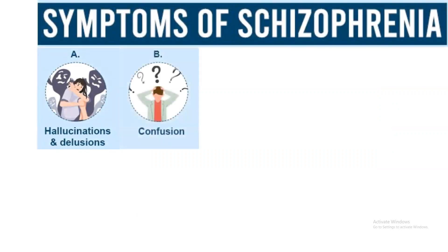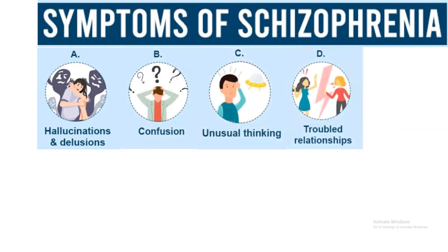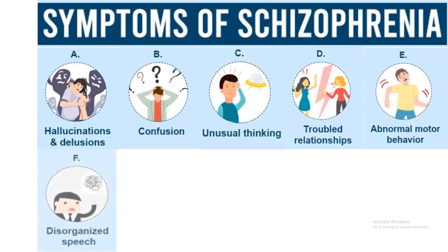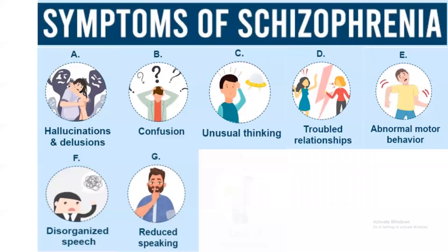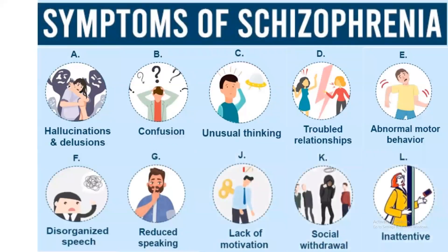What are the symptoms of schizophrenia? Hallucinations, delusions, confusion, unusual thinking, troubled relationships, abnormal motor behavior, disorganized speech, reduced speaking, lack of motivation, social withdrawal, and inattentiveness.